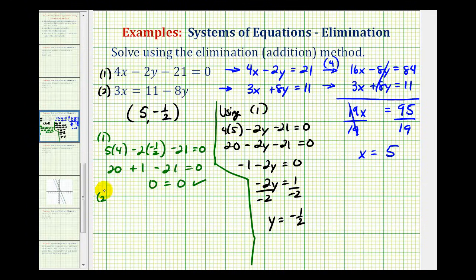And then for equation 2, we would have 3 times 5 equals 11 minus 8 times negative 1 half. So we have 15 equals 11, and then this would be plus 4, which also checks.